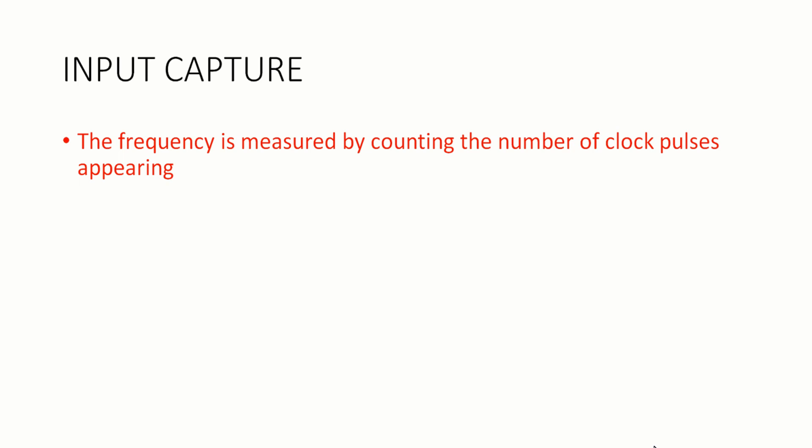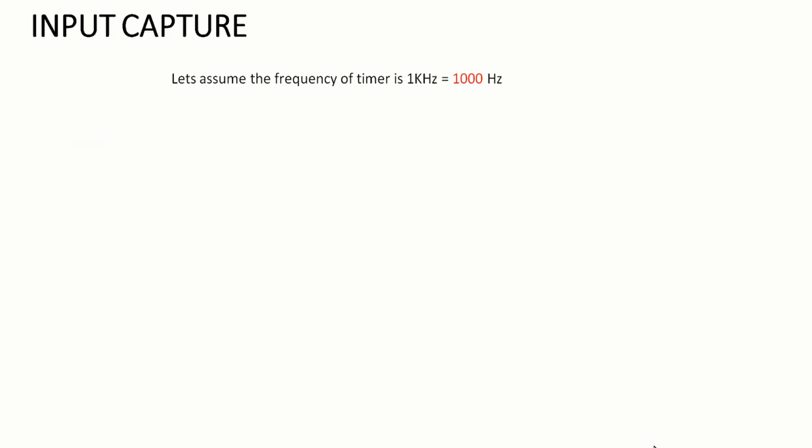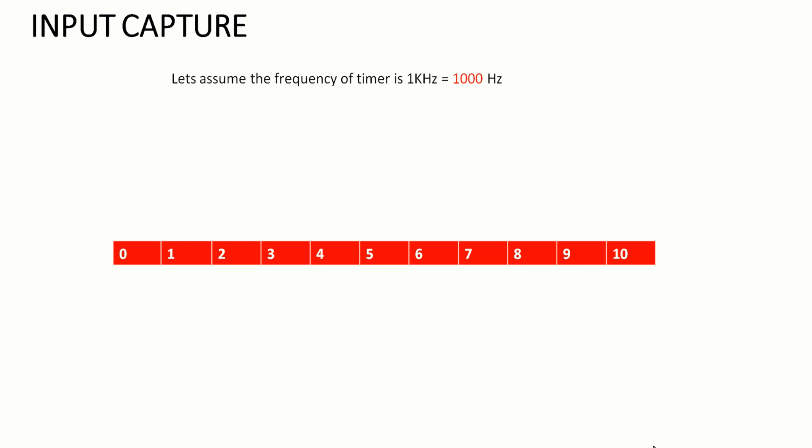Frequency is measured by counting the number of clock pulses appearing at a particular pin. Let's assume the timer is running at 1 kHz, that is 1000 Hz. As we know from the previous lecture on timer interrupts, when the timer starts it counts from 0 up to its maximum value. For a 16-bit timer it counts up to 65535, then rolls over back to 0. In our case the timer frequency is 1000 Hz, giving a time period of 1 by 1000, which is 1 millisecond per count step.